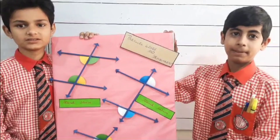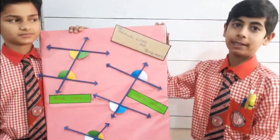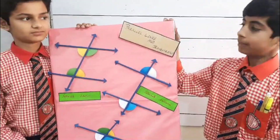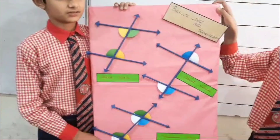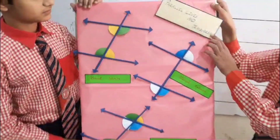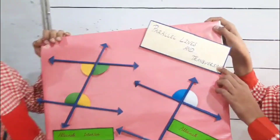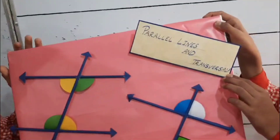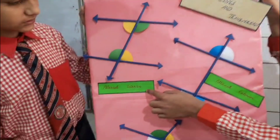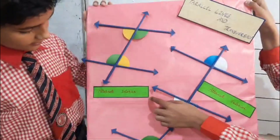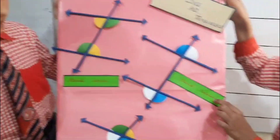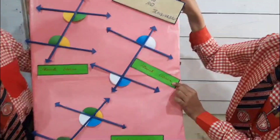My name is Ash and I am from grade 7. Today our topic is parallel lines and transversal lines. This is my alternate interior and alternate exterior.